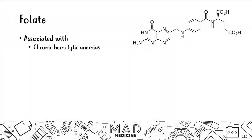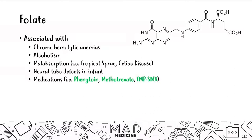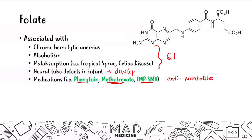Folate deficiency is associated with chronic hemolytic anemias, alcoholism, malabsorption such as tropical sprue or celiac disease, neural tube defects in a fetus, and medications. These conditions affect the GI tract, neural tube development, or folate metabolism directly. The key medications are phenytoin, methotrexate, and TMP-SMX, which act as anti-metabolites, making it very difficult for your body to produce DNA and RNA.